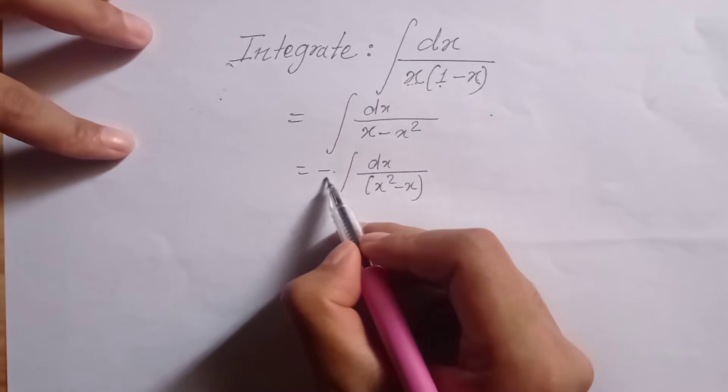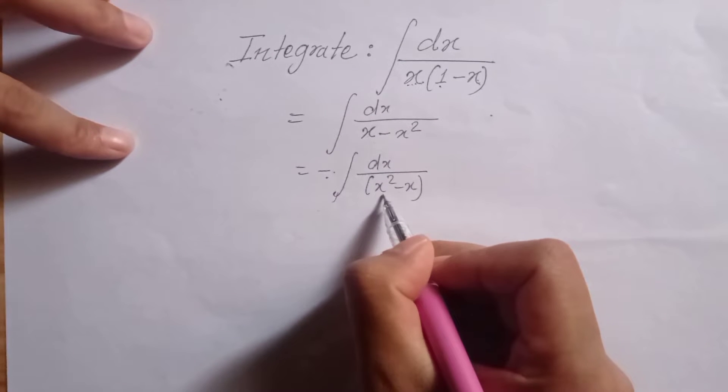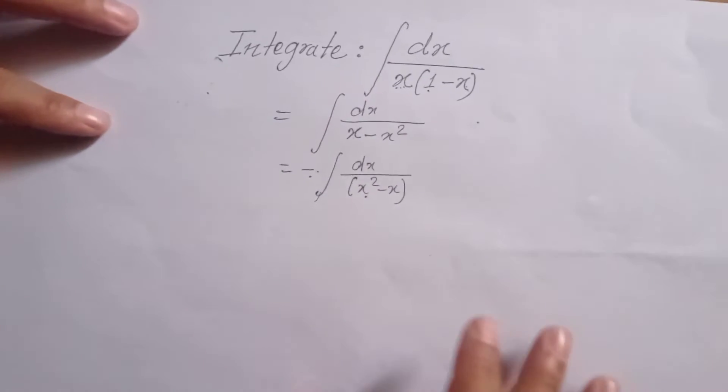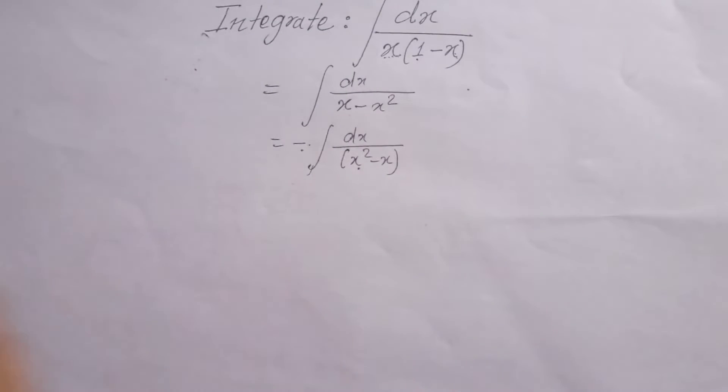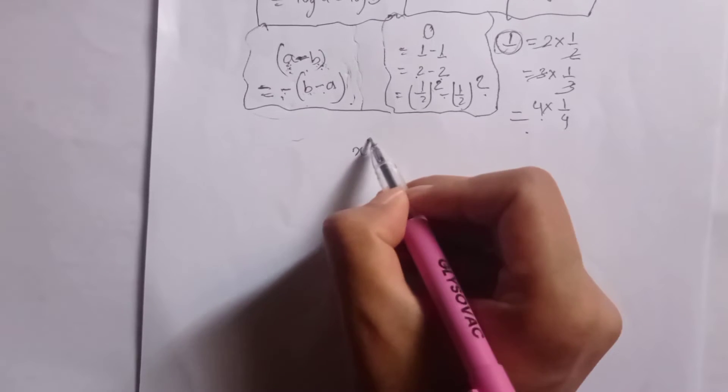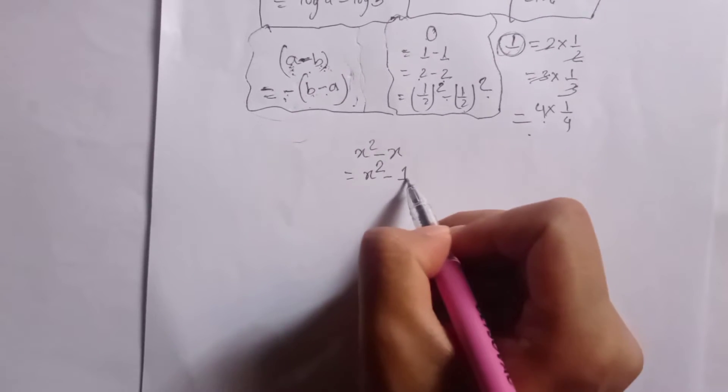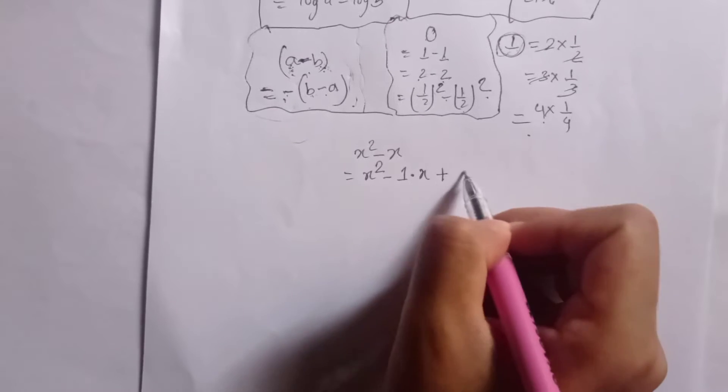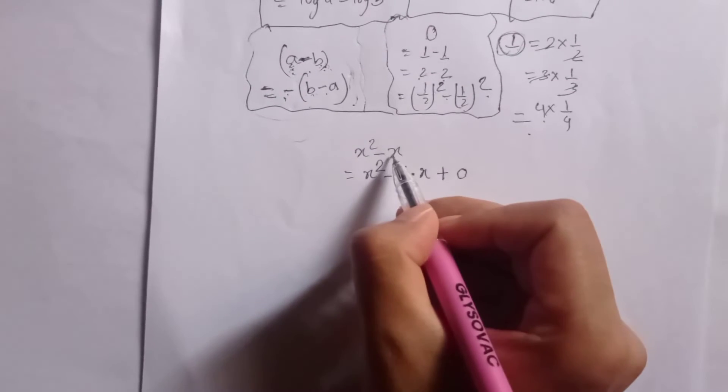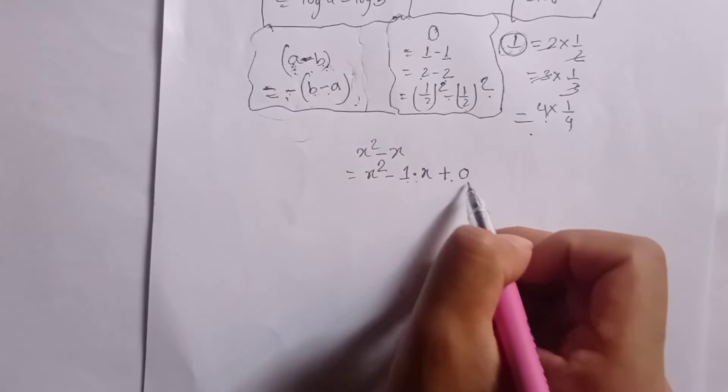The denominator is x squared minus x. So x squared minus x, I can do this by dividing: x squared minus x divided into x squared minus 1 dot x plus 0.